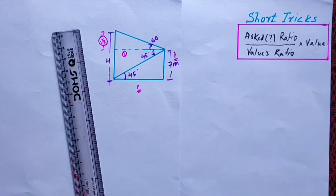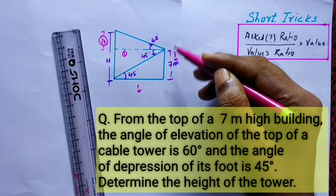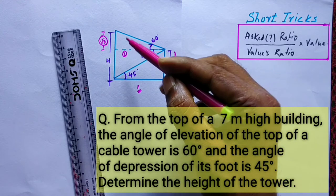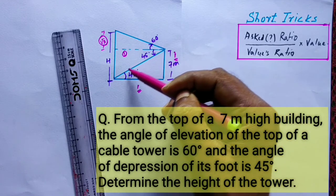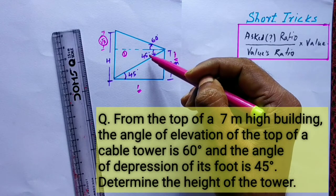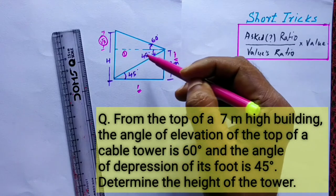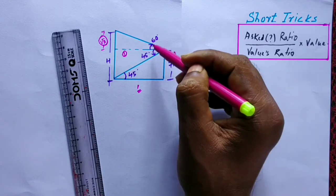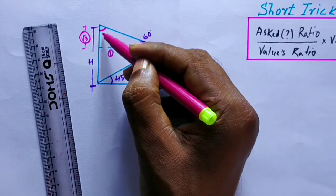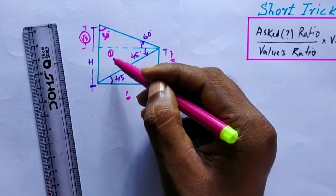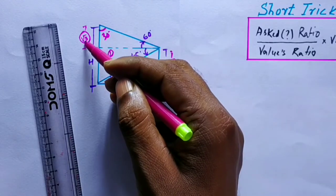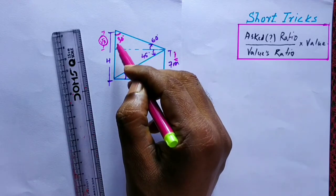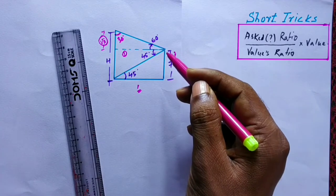Another question: From the top of a 7-meter high building, the angle of elevation of the top of a cable tower is 60° and the angle of depression of the foot of the tower is 45°. Determine the height of the tower. The angle of depression and the alternate angle are equal, so we write 45° here. In this triangle, 60° gives a 30° complement — opposite 30° is ratio 1 and opposite 60° is √3. We need to find the height h. For this triangle, the ratio is √3 and the value from here to here is 7.